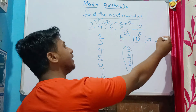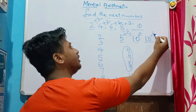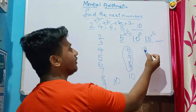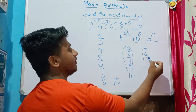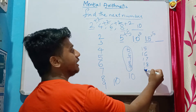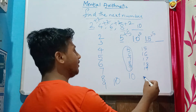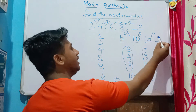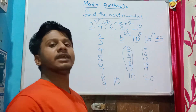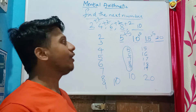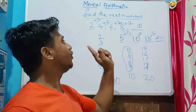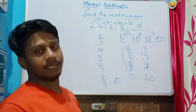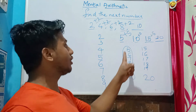So which number comes if I add five to fifteen? After fifteen: sixteen, seventeen, eighteen, nineteen — twenty! So twenty is the answer. For each number in this series, we are adding five to get the next number.